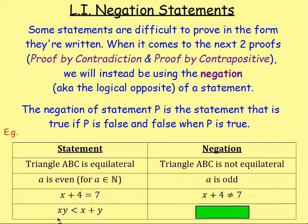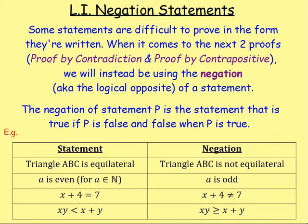And finally, if we have that XY < X + Y, the opposite would be that XY is not less than X + Y. If it's not less than, it could be bigger than — so XY > X + Y. However, you also have to consider that it could be bigger than or equal to X + Y. So as long as it's not less than, it would be bigger than or equal to.